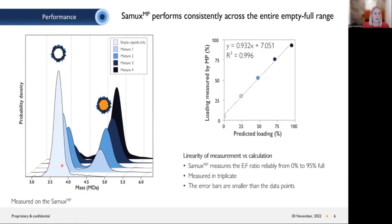Starting with measurement of different empty/full ratios — from 100% empty to almost 100% full — you can see the empty peak on the left and the full peak on the right. We created these by mixing empty and full AAVs in defined ratios and then measured the empty/full ratio with the system. Plotting the predicted loading based on mixing versus the loading measured by the mass photometer, you can see it is very accurate and shows a really nice linear relationship all the way from 0 to 100%, confirming we can accurately determine the empty/full ratio across the entire range.